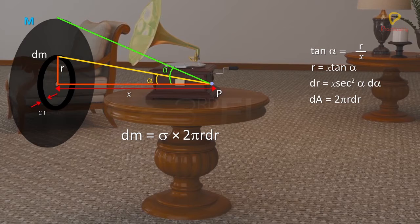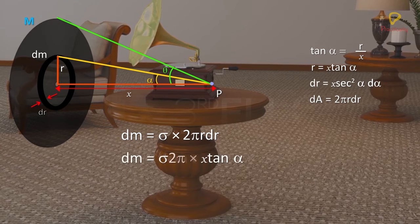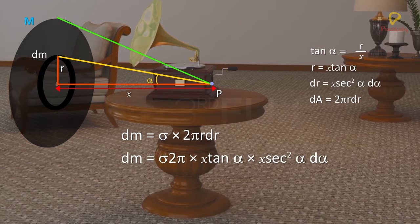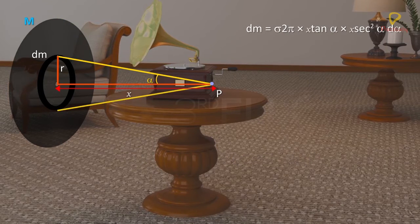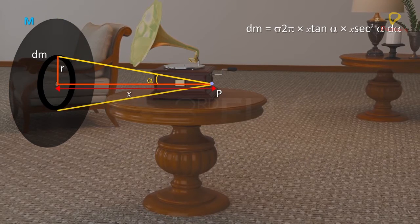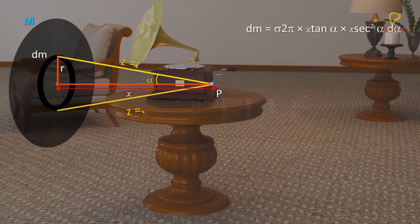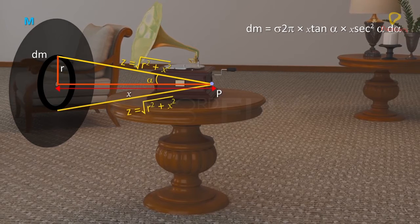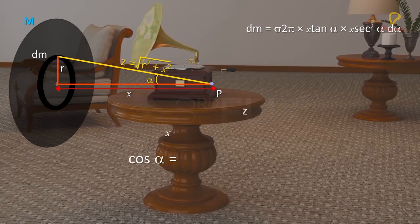Therefore, dm equals sigma 2π X tan alpha X sec squared alpha d alpha. The distance between any point on the ring and P is square root of r squared plus X squared. Cos alpha equals X by Z.